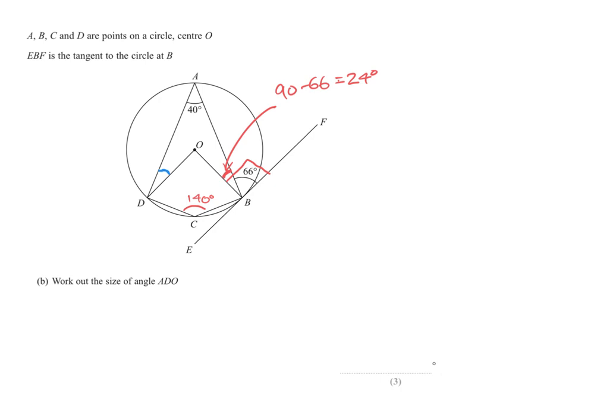Now, I wrote on from the first part 140 degrees is the angle DCB. You can see that there. And basically what we can say is that the angle here, DOB, the obtuse angle there, is going to be double this angle here. Remember, the angle at the center is double the angle at the circumference. So this angle here is going to be 140 multiplied by 2, which is 280 degrees. It's the reflex or the obtuse angle there.